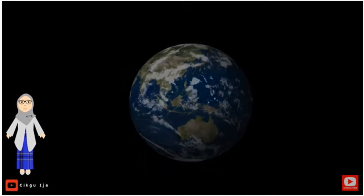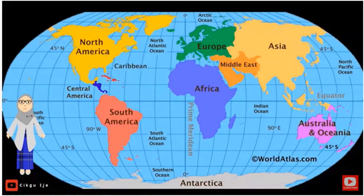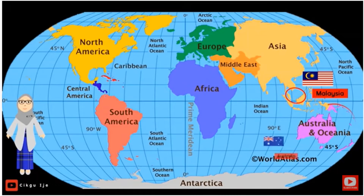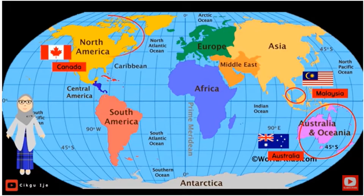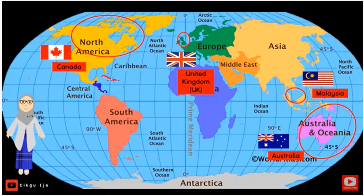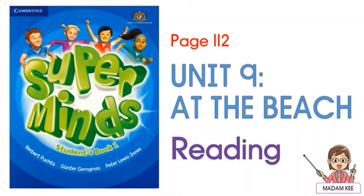There are many countries in the world. So today we are going to learn about other countries. This is Malaysia, and that one is Australia. Another one is Canada. And that one is United Kingdom or UK. Reading.